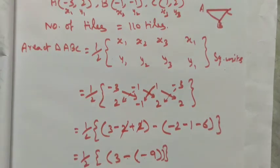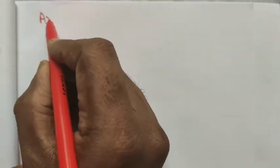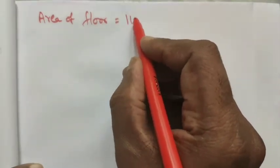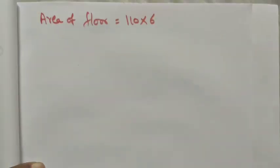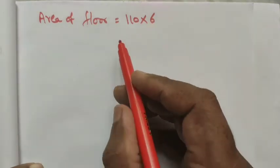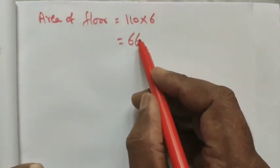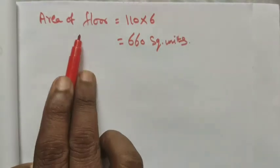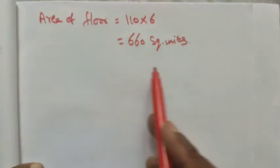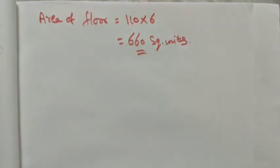Now we find the area of the floor. The floor contains 110 tiles, so: Area of floor = 110 × 6 = 660 square units. This is the total area of the floor, which is the area covered by 110 tiles. Thank you, students.